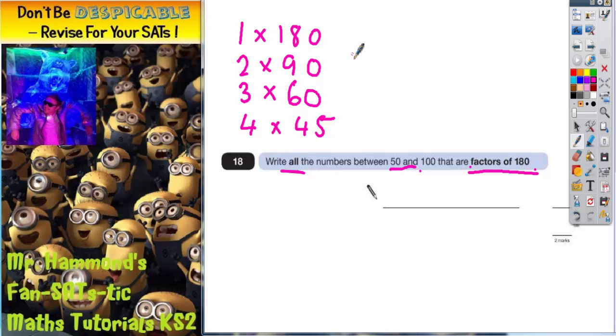Now, there are actually more factor pairs of 180. Well, you can see what's happening here. Neither of these numbers, 1 nor 180, are between 50 and 100. So we can't have either of those.